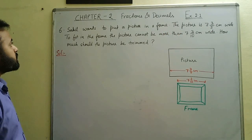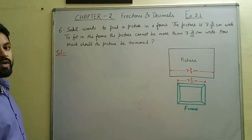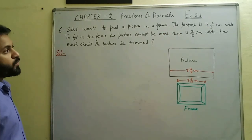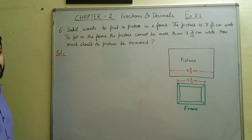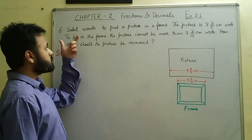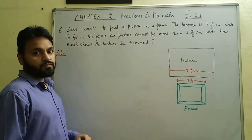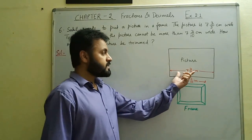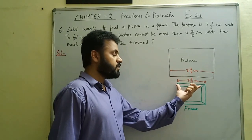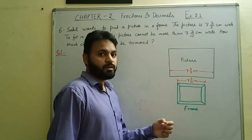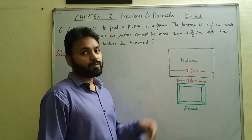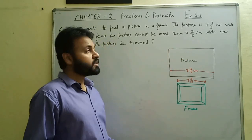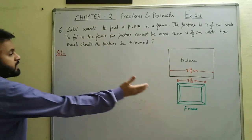In question number 6, Sahil wants to put a picture in a frame. The picture is 7⅗ cm wide, but to fit the frame the picture cannot be more than 7 3/10 cm wide. The frame width is less than the picture width, so we need to trim the picture.